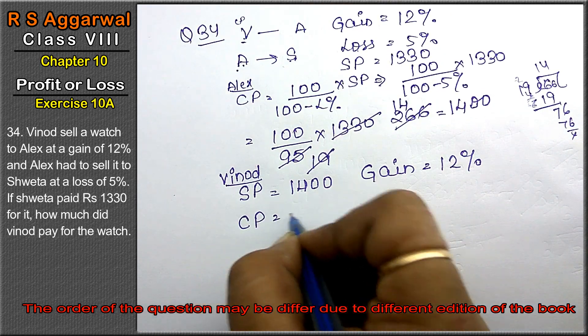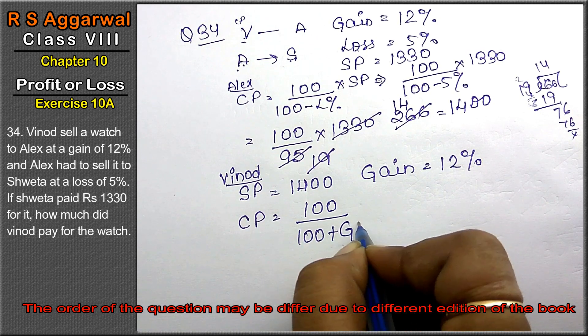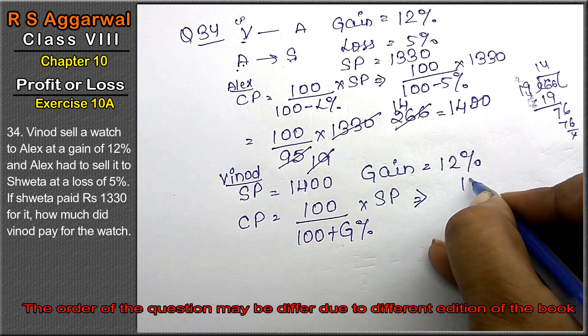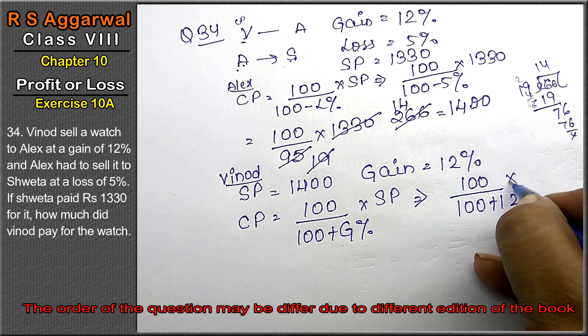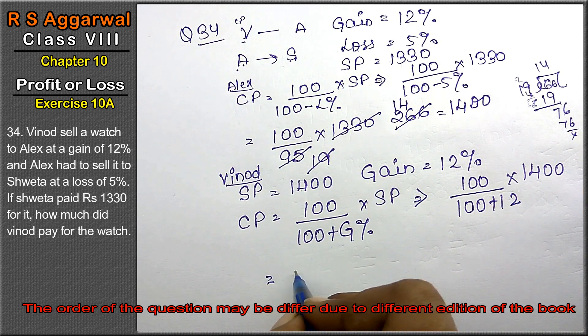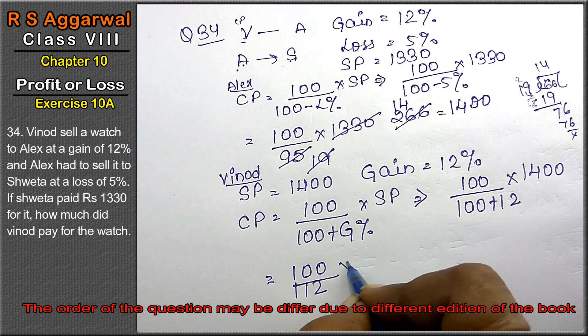The CP formula is 100 upon 100 plus gain percent into SP. That means 100 upon 100 plus 12 into 1400. This is 100 upon 112 into 1400.